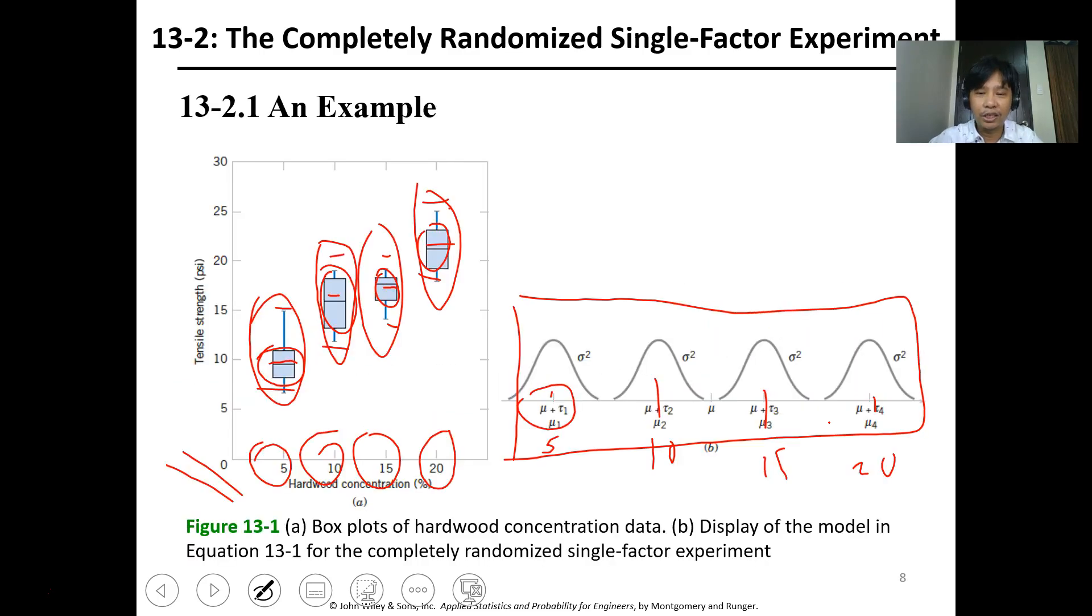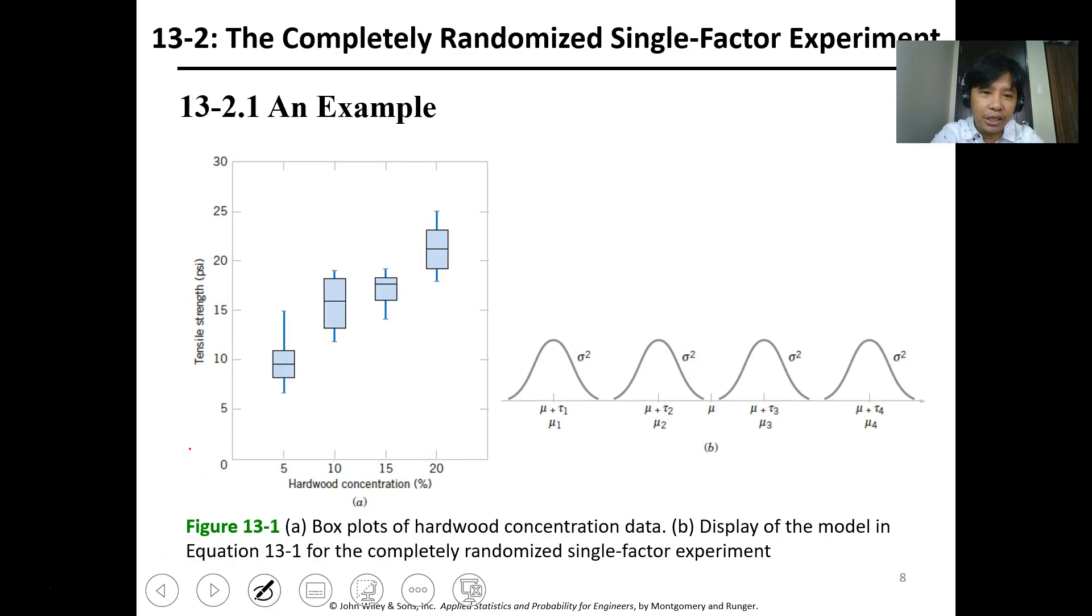We can also plot the individual normal distributions. This one pertains to 5%, this is 10%, 15%, and 20%. The average values are different, and the standard deviations are also different. Based from the figure, we can say that the data for 5 and 20 are different.